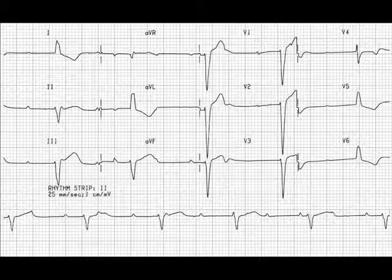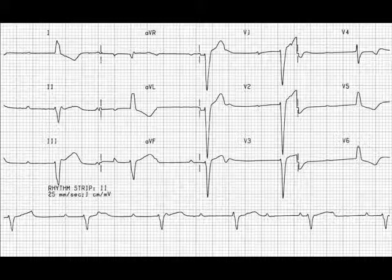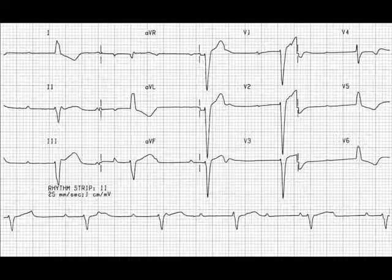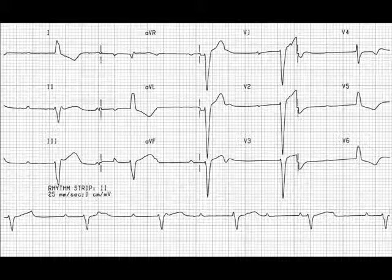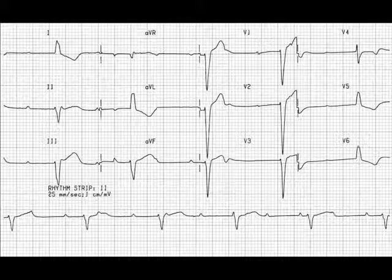Whereas in ventricular arrhythmias, and where there are ventricular conduction abnormalities, the impulse is generally within the ventricular wall itself and takes its time to travel around this abnormal pathway. The QRS complex therefore becomes wide and bizarre in shape.